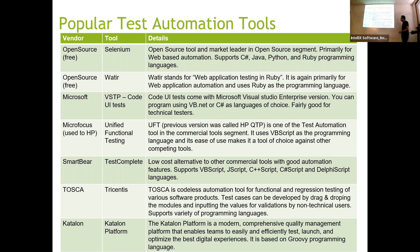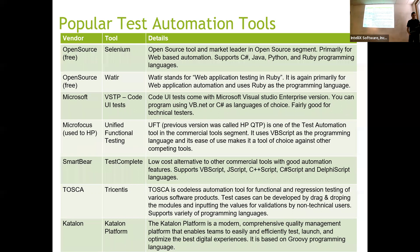For TestComplete and UFT, you can create basic tests without any coding knowledge. But when you go to the advanced level, you need to know some programming or scripting language. Katalon's license is around $1,800 per tester.